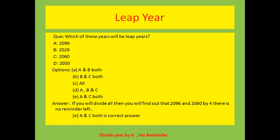Here is another question. Four options are given: which of these years will be a leap year? The options are 2096, 2029, 2060, and 2050. You have to divide each by 4 and find out which years are leap years. Only 2096 and 2060 are fully divisible.